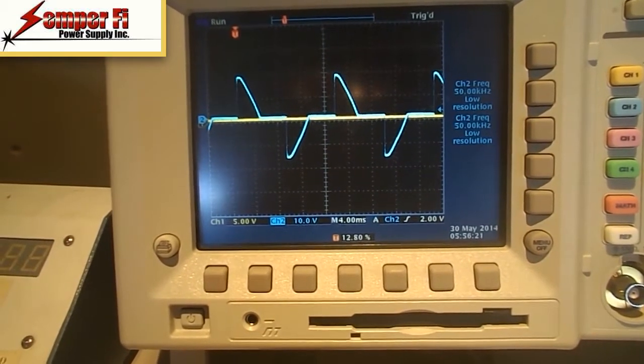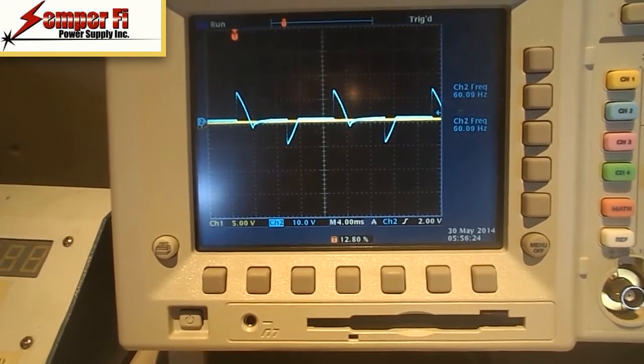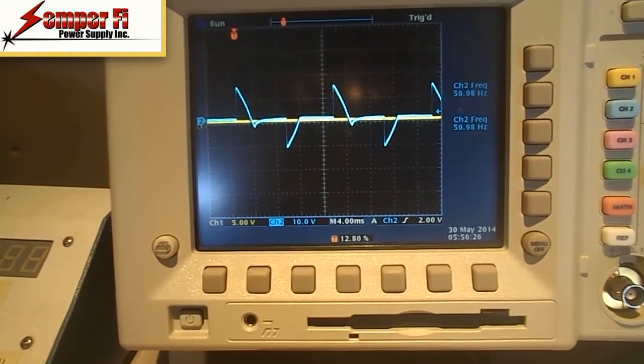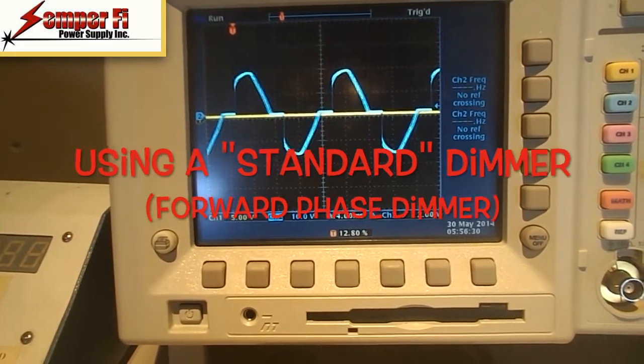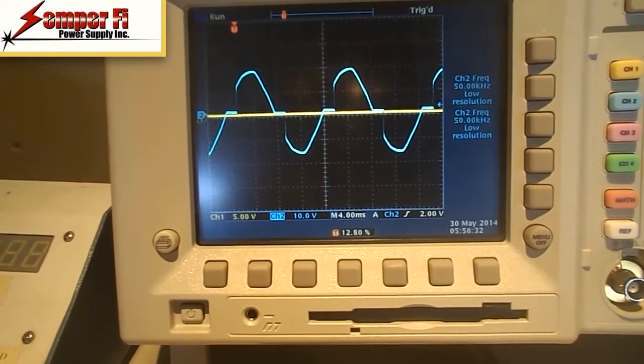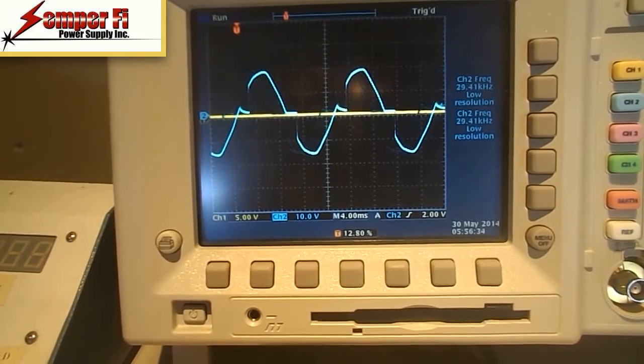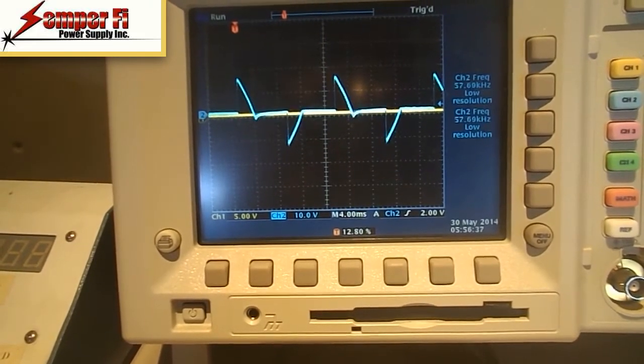So this is what a waveform, an AC waveform, looks like when it's dimmed with a wallbox dimmer. Control systems will look very similar—some better, some worse.